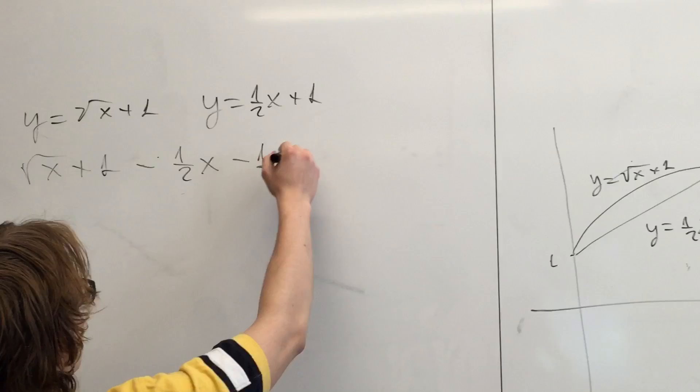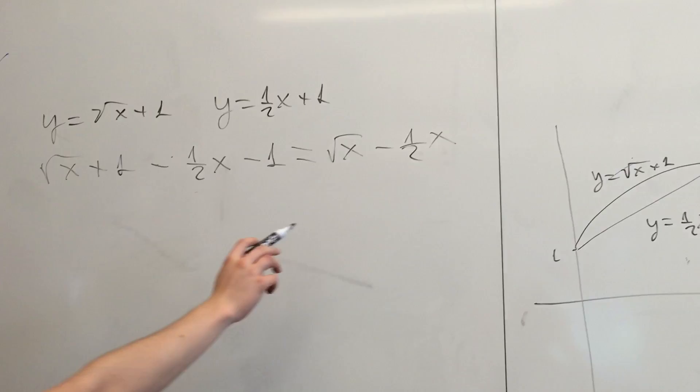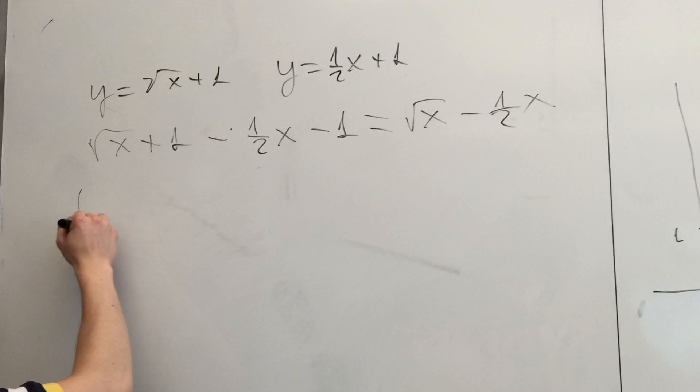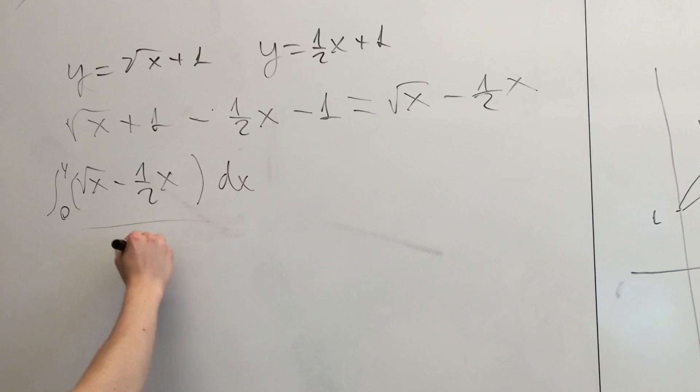So we'll find the integral of this function on the interval from 0 to 4, times dx, and then divide it by 4, which can be written as (1/4) times the integral.